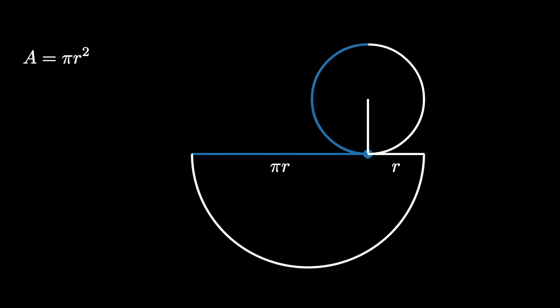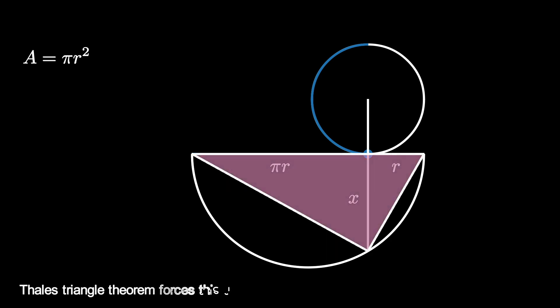Then create the half chord from the bottom of the original circle to the larger semicircle and call its length x. Connecting the ends of the diameter to the end of this half chord results in a right triangle, according to Thales' triangle theorem.